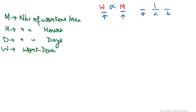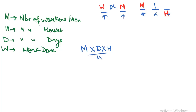If the number of men increases and they are doing more work, then the hours and days cut. One quantity increases and the other decreases — they are opposites. Now remember the formula: M × D × H divided by W. That is, M1 × D1 × H1 divided by W1 equals M2 × D2 × H2 divided by W2.